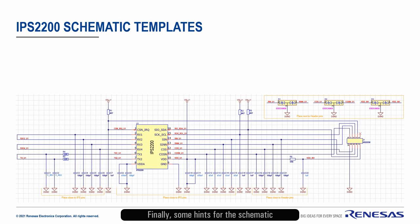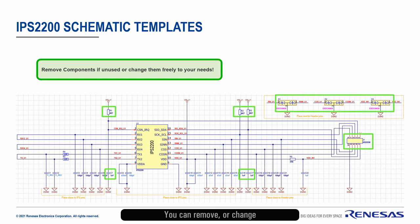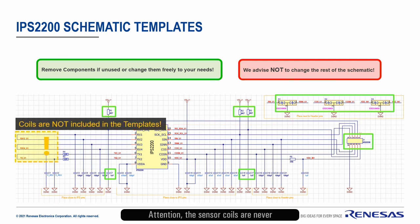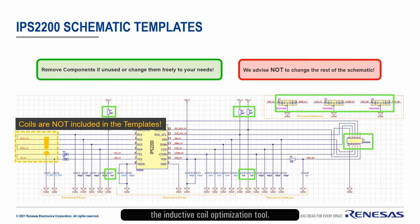Finally, some hints for the schematic templates, by the example of the available IPS2200 sensor. You can remove or change the green marked components freely, but we suggest that you don't change the rest of the schematic. Attention: the sensor coils are never part of any template. Fully functional designs can be found in the CRB, or customer reference board catalog. Brand new, custom-tailored coils can be generated with the ICOT, the Inductive Coil Optimization Tool. Please ask for the help of your local Renesas contact partner.